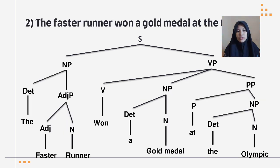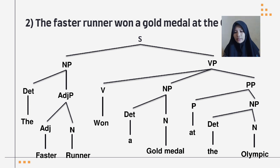Second sentence: 'The fastest runner won a gold medal at the Olympic.' The sentence is broken into two parts: a noun phrase and a verb phrase. The noun phrase is broken into a determiner 'the' and an adjective phrase, which is further divided into an adjective 'faster' and a noun 'runner.' The verb phrase is broken into three parts: a verb 'won,' a noun phrase, and a prepositional phrase. The noun phrase contains a determiner 'a' and a noun 'gold medal.' The prepositional phrase contains a preposition 'at' and a noun phrase, which contains a determiner 'the' and the noun 'Olympic.'